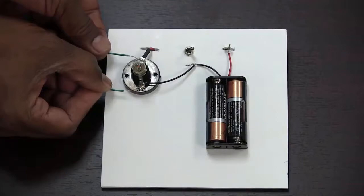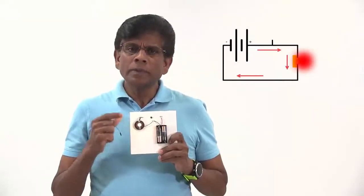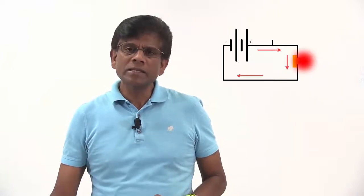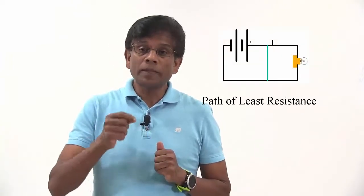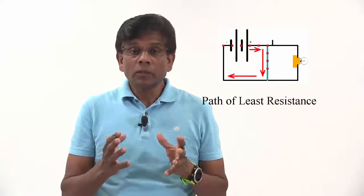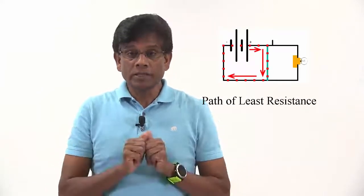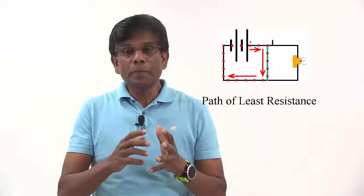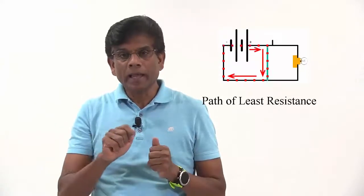So what happened? Why did the bulb turn off? Well, electricity takes the easiest path or the path of least resistance. When I connected the wire between the battery terminals, I created another path with almost no resistance. So electricity bypassed the intended path and took the shortest or the easiest path.